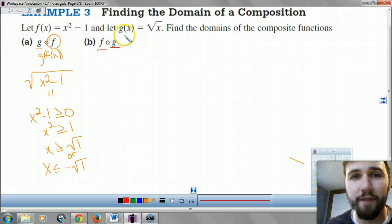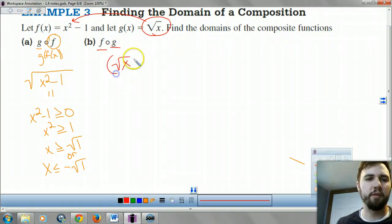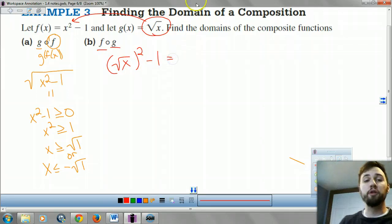Now let's look at the fog. Let's lift the fog. I'm going to take my g of x and plug it in for my f of x. So I get square root of x, plug that in for x, squared minus 1. Square root of x squared is just x, right? So this is actually x minus 1.